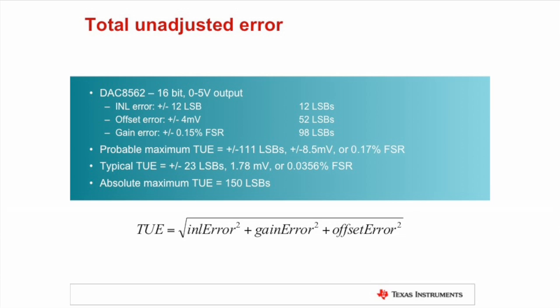Using the DAC 8562 as an example, we can run through an example total unadjusted error calculation. The figures shown in this slide are the max error specs for INL error, gain error, and offset error. If we apply our root sum squared technique, we can calculate a total unadjusted error of 111 LSBs, 8.5 mV, or 0.17% full-scale range.